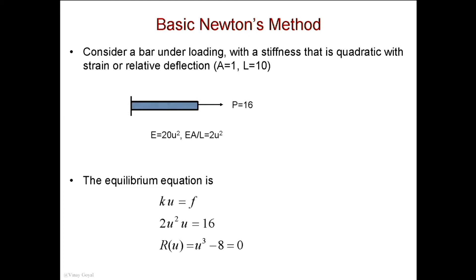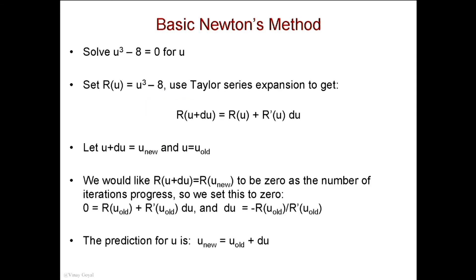To do that, we're going to use Taylor series expansion. So I want to solve for U. I can't tell Abaqus to solve this huge nonlinear system of equations exactly — we need a systematic approach. Using Taylor series expansion: R(U + dU) expanded about U gives R(U) plus the derivative of R with respect to U times dU. I want the future value to be zero — I want the residual to converge to zero so that U cubed minus 8 equals 0 and U equals 2.